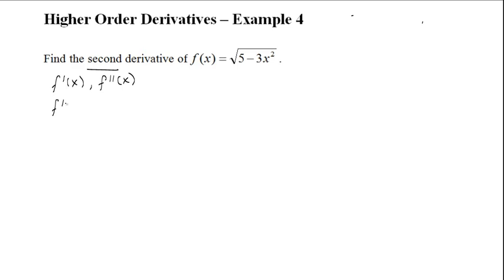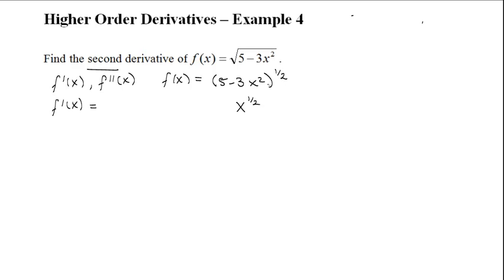We can start by finding our first derivative. If I rewrite f of x, you can see that we're going to need to use chain rule. When something is to a power of a half, usually we see it as x to the power of a half. But here, 5 minus 3x squared is in the place of x, so this means that we have a function within a function.